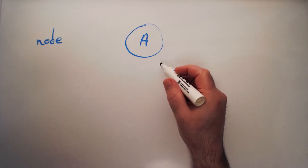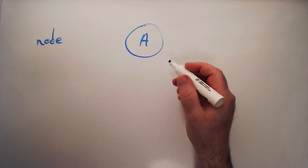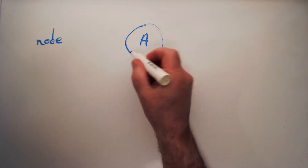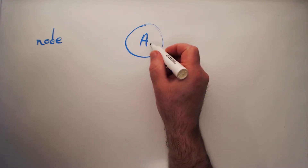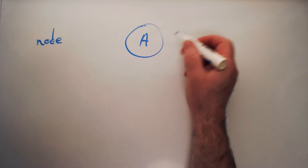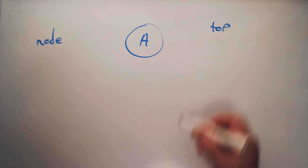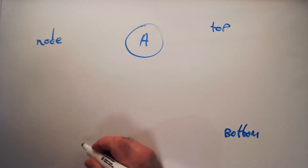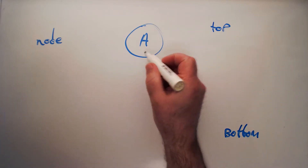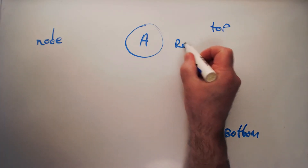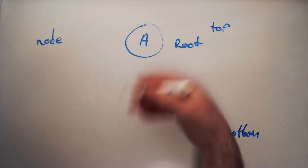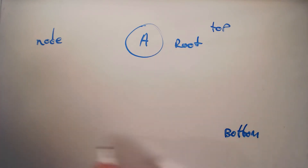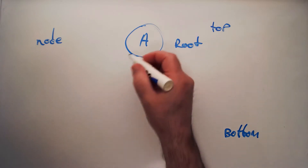Where trees are concerned, what we'll see is we're defining a hierarchical relationship. The first node at the top of the tree is called the root. It's described like a regular tree but upside down — the root is on the top and the leaves are on the bottom.